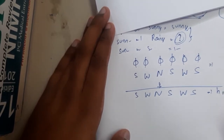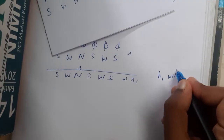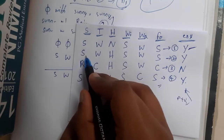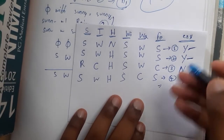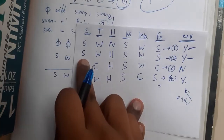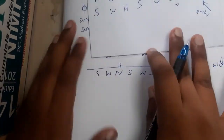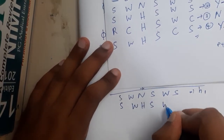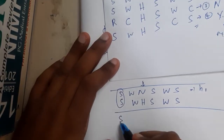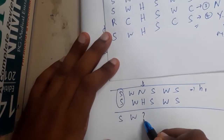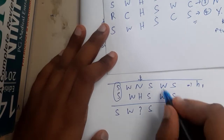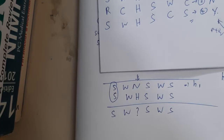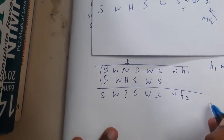Next, compare h1 with row 2. Row 2 is a positive example (yes), so we proceed. h1 is (sunny, warm, normal, strong, warm, same) and row 2 is (sunny, warm, high, strong, warm, same). Comparing: sunny=sunny, warm=warm, normal≠high → '?', strong=strong, warm=warm, same=same. So h2 = (sunny, warm, ?, strong, warm, same).